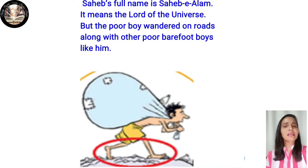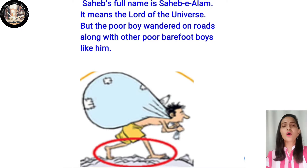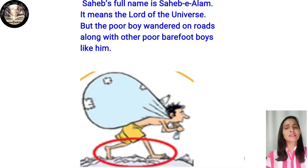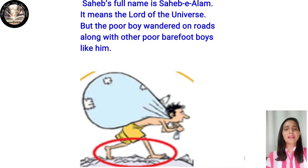Sahib's full name is Sahib-e-Alam, which means 'the lord of the universe.' But the poor boy wandered on the roads barefoot along with other poor barefoot boys like him. The author talked to Sahib's companions — one of them told her it was a tradition to walk barefoot, to hide their poverty.